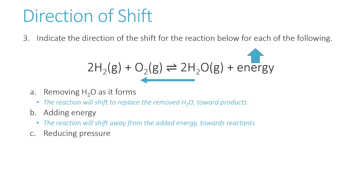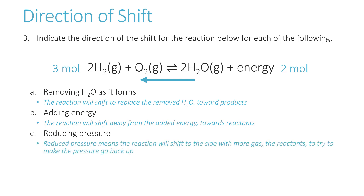Whenever we change the pressure, this only matters for a gaseous equation. To figure out which way it will shift, we count the moles of gas on each side. On the reactant side, we have two moles of hydrogen and one mole of oxygen — three moles total. On the product side, we have two moles of water. If we reduce the pressure, the equation shifts toward reactants, which have more moles of gas, to make the pressure go back up.